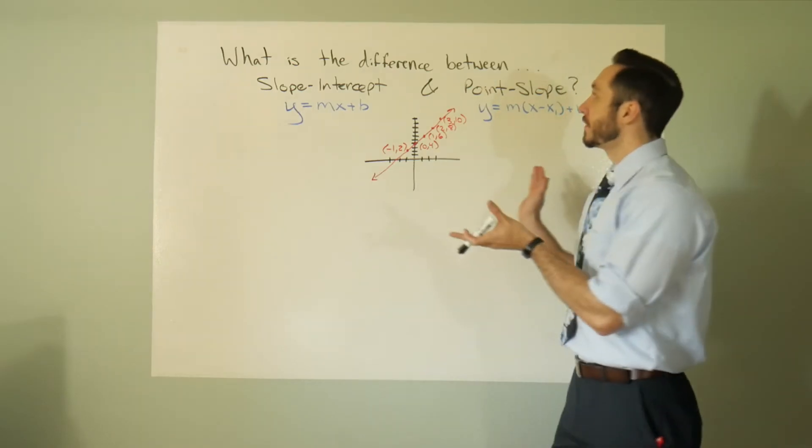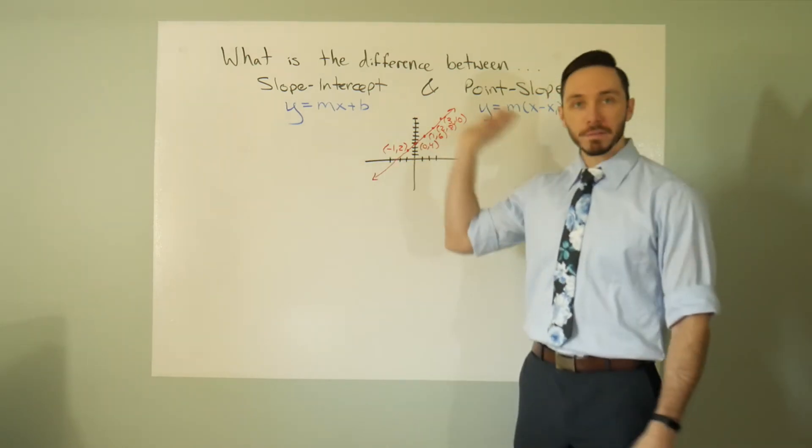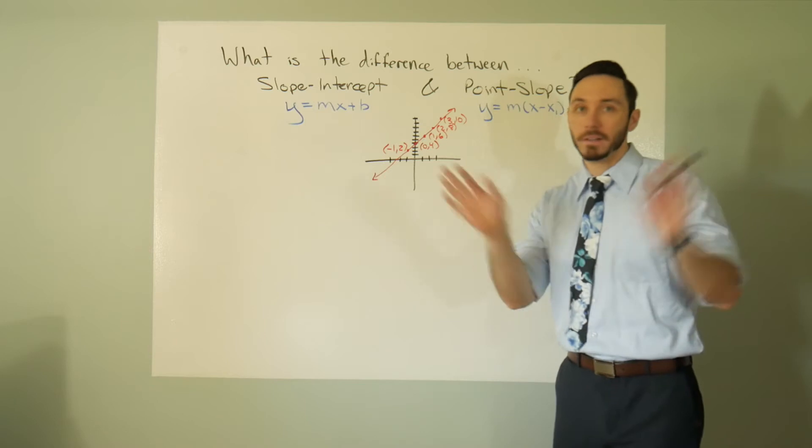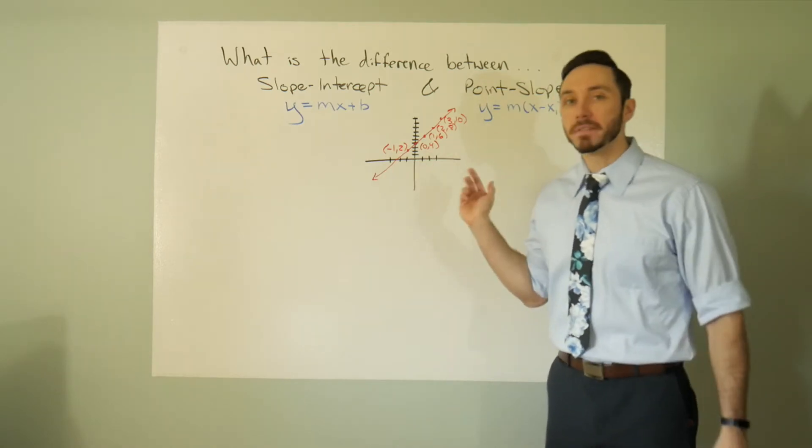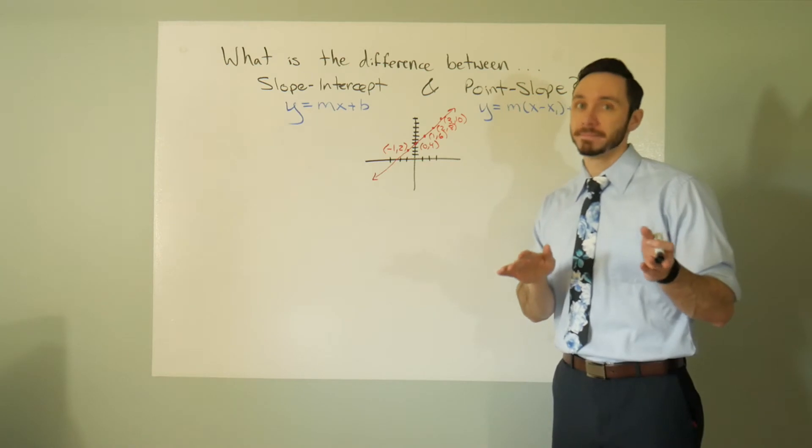Hey, hey math people! What's the difference between slope-intercept and point-slope? It sounds like you're just saying a bunch of random mathy words and calling it a thing. The names are very intentional, they mean something. Let me break this down for you.